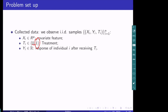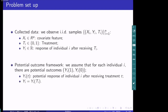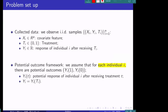In addition, to describe causality we consider the potential outcome framework. We assume that for each individual i, there exist two potential outcomes, denoted Y_i(1) and Y_i(0). Y_i(1) corresponds to the potential response of individual i if they received the treatment, and Y_i(0) corresponds to the potential response if they did not receive the treatment.